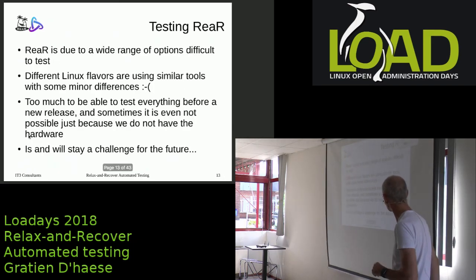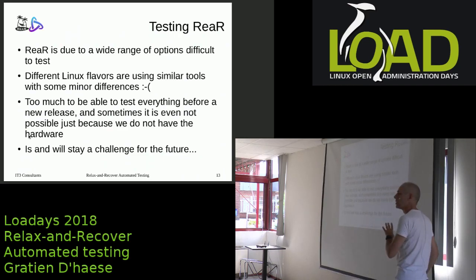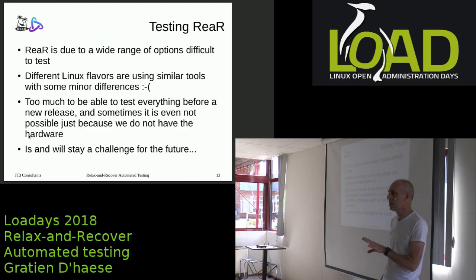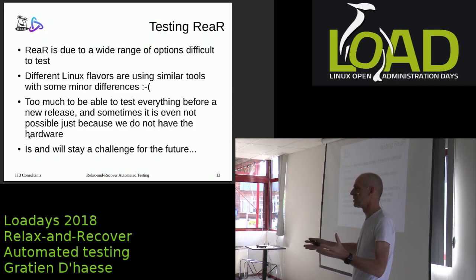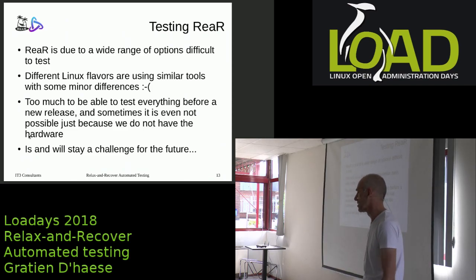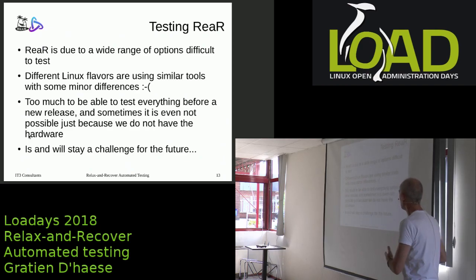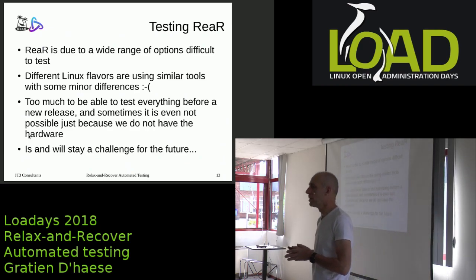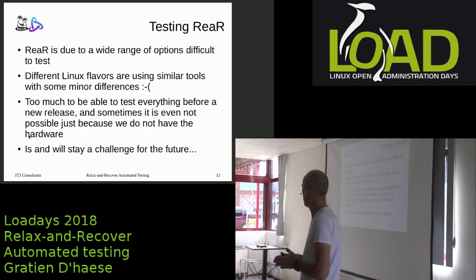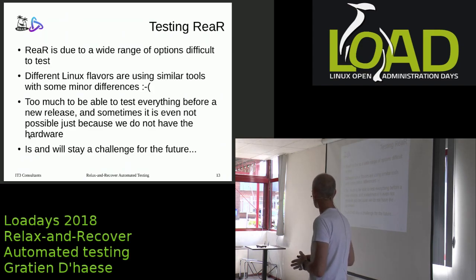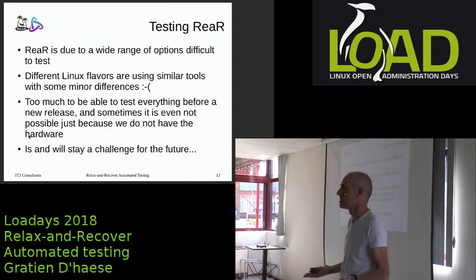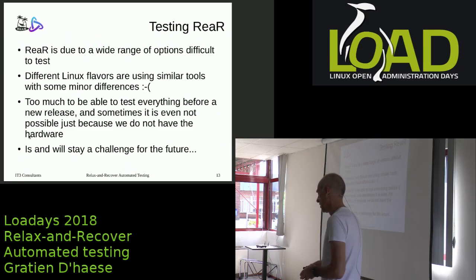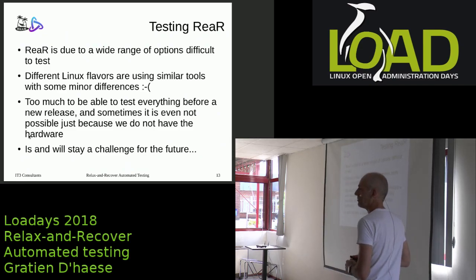Before we jump into automated testing: testing ReaR — now more than 10 years old, from 2006 until now — was always a problem because of different architectures, different distribution versions, and so on. It was a pain. Automating that helps us: when we make a new release or a new branch in GitHub, testing is very important and we cannot test everything at once. Even after a release, bug fixes are important.